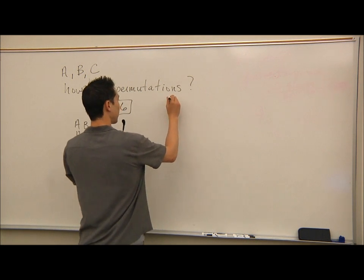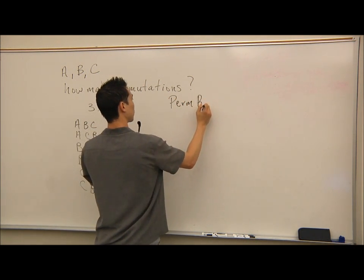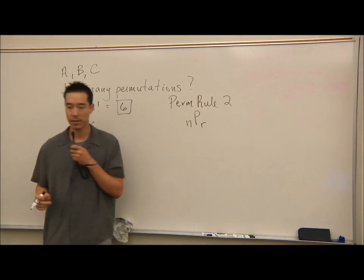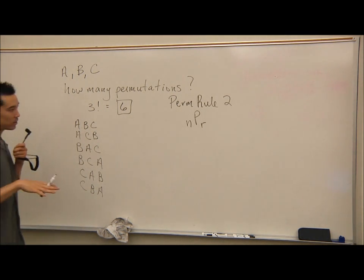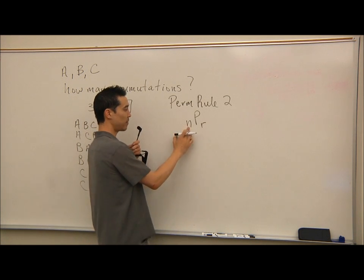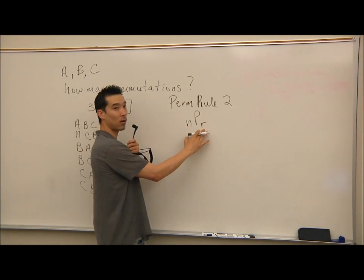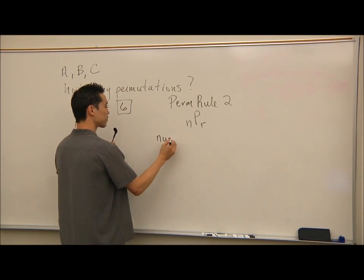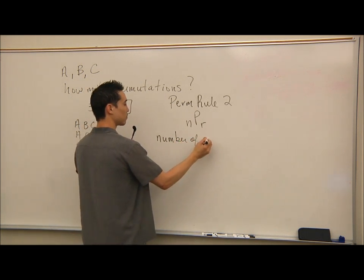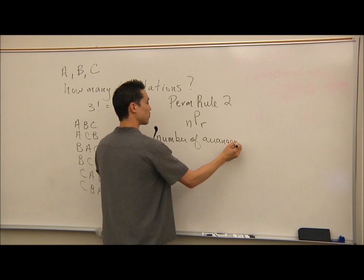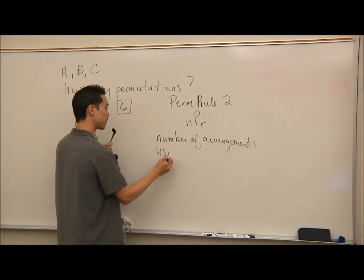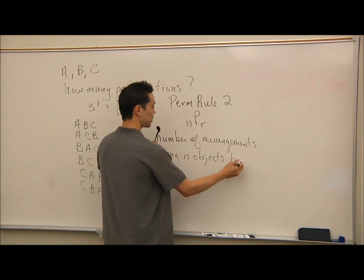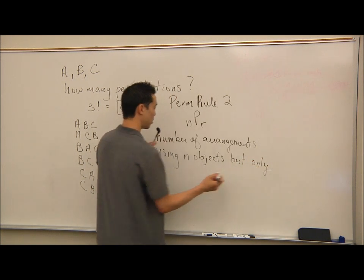Now let's go to permutation rule number 2: N-P-R. This is how many different arrangements of N distinct objects you can make, but only doing groups of R at a time — the number of arrangements using N objects but only R at a time.